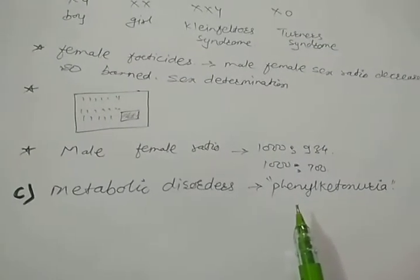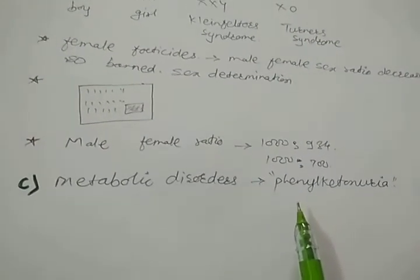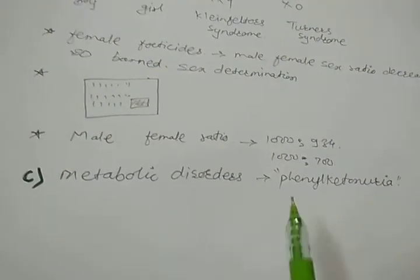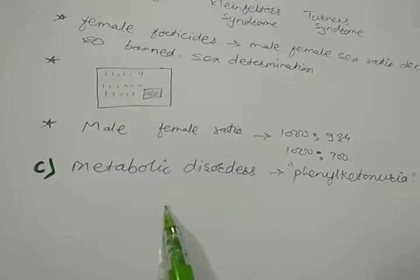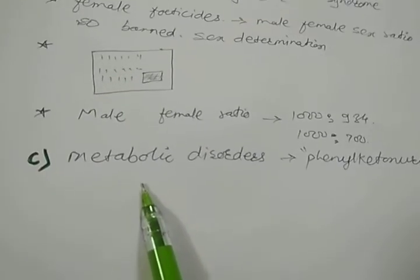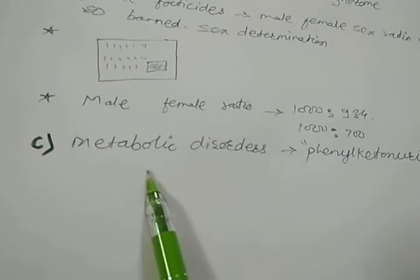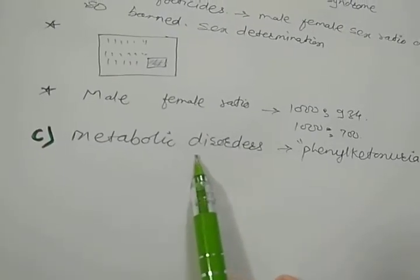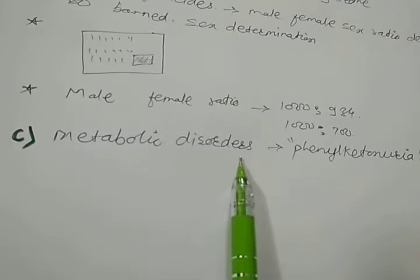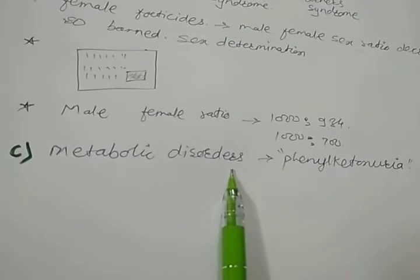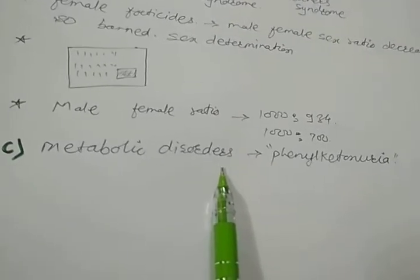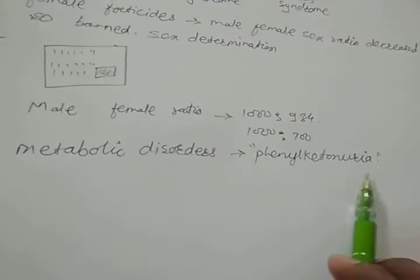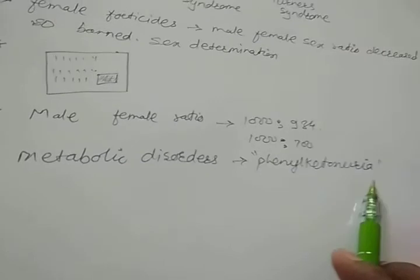The third thing is that by using karyotyping we can also detect metabolic disorders. For example, phenylketonuria — which is a genetic disorder — can be detected.